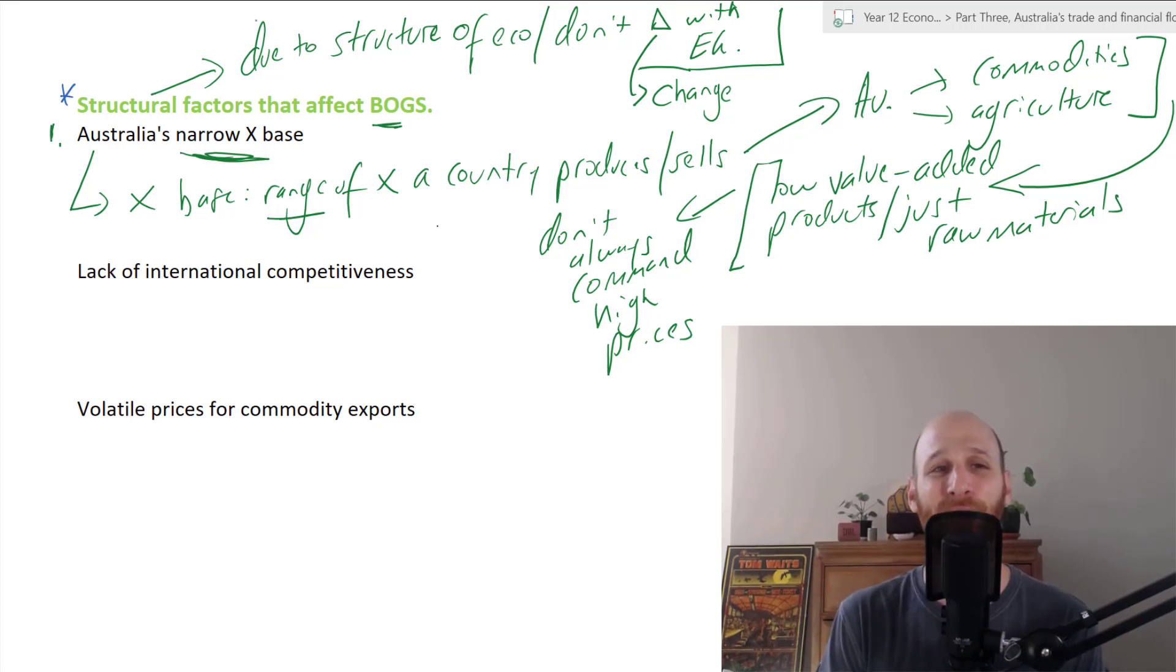Export base refers to the range of exports that a country produces and sells on world markets. Australia is focused on commodities and agriculture, which are relatively low value-added products. Essentially, Australia is just selling the raw materials to another country who can then do something more fancy with it. Because it's just raw materials, they don't always command very high prices because they're not very sophisticated. Now, a proviso: yes, when they're in high demand, prices are going to go through the roof. But more sophisticated products, manufactured goods, can earn countries higher revenue on world markets. So Australia has a narrow export base focused on low value-added products.